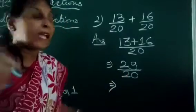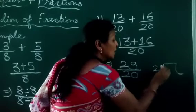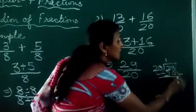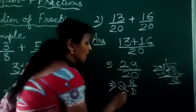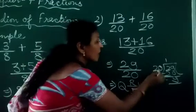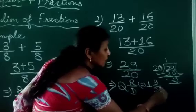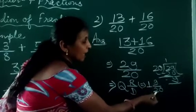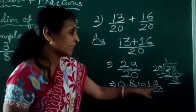We divide 29 by 20. 20 is our divisor and 29 is our dividend. 1 times 20 — we write it, then subtract, and 9 is the remainder. We use the formula Q R upon D, where Q is the quotient, R is the remainder, and D is the divisor. The quotient is 1, the remainder is 9, and the divisor is 20. When we cross-multiply: 20 multiplied by 1, then add 9, it becomes 29 upon 20 — confirming the improper fraction is converted into the mixed fraction. Our answer is 1 whole 9 upon 20.